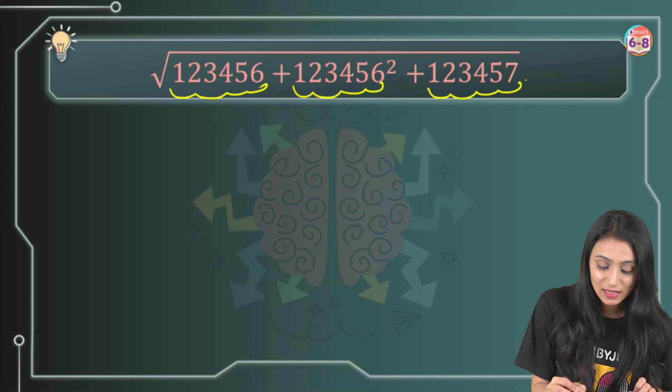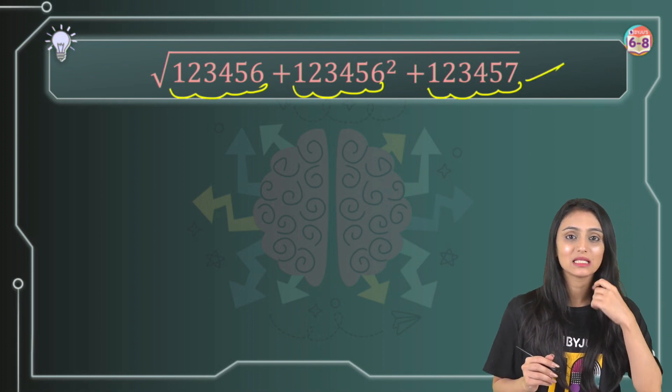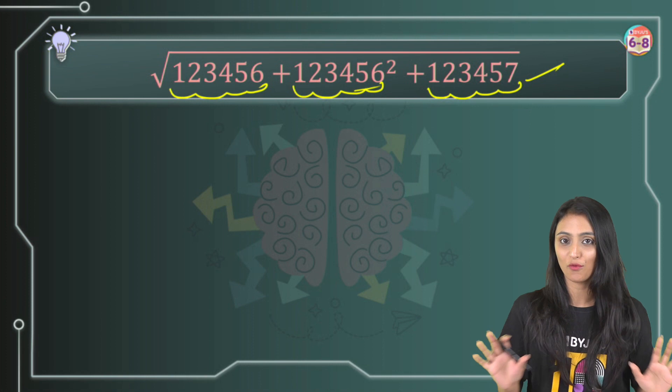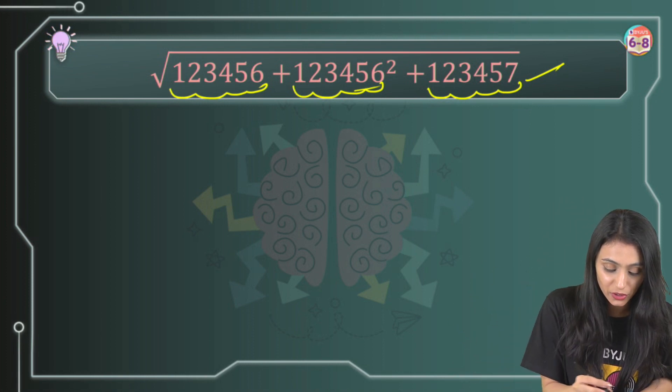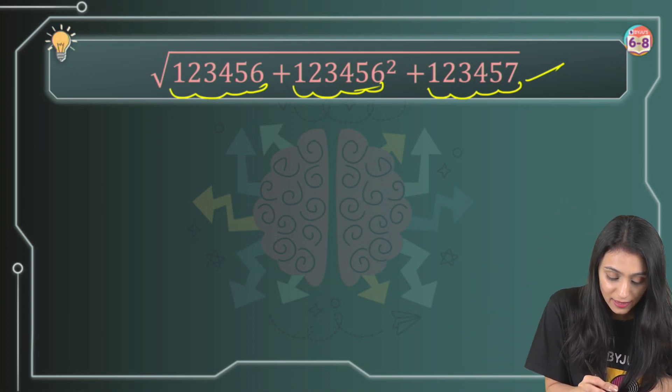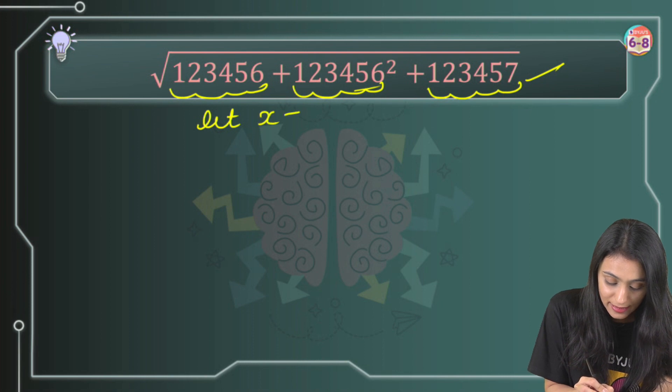Now you see that this number 123457 is basically the successor of this number 123456. Okay, let's do one thing here. Let's suppose let x be equals to 123456.